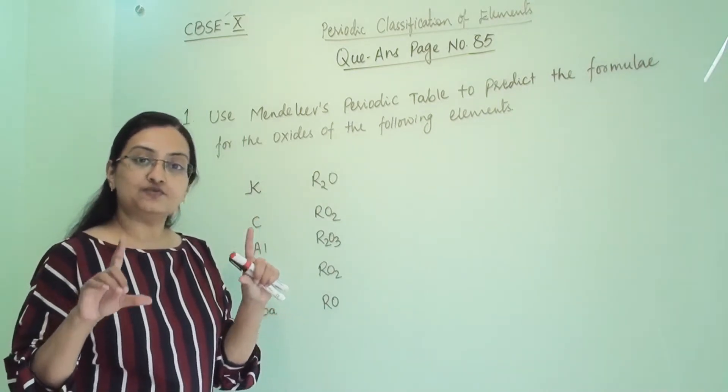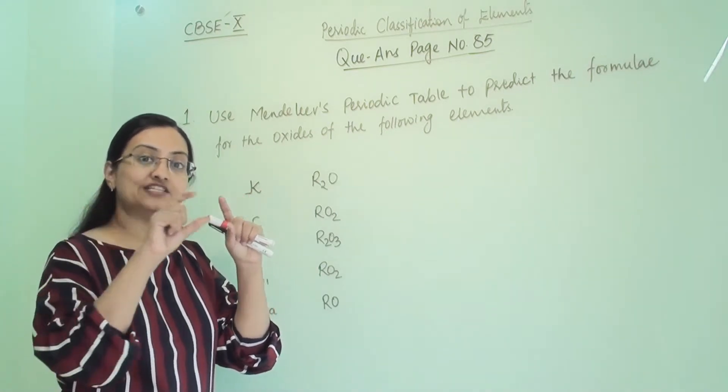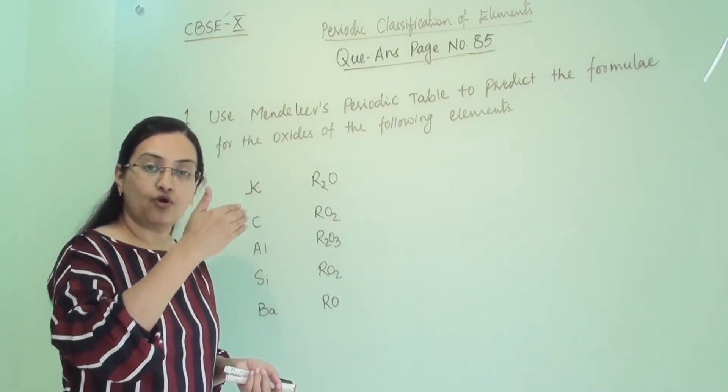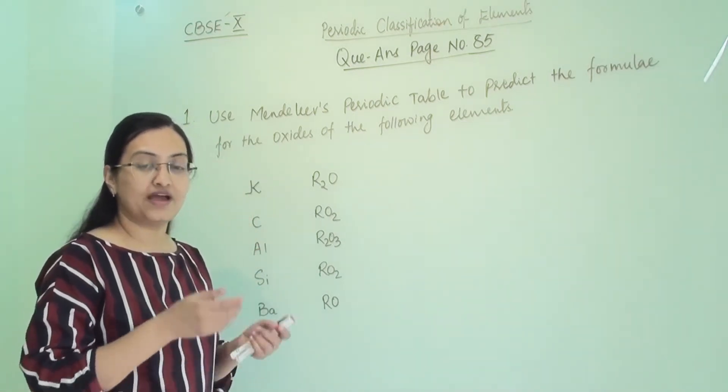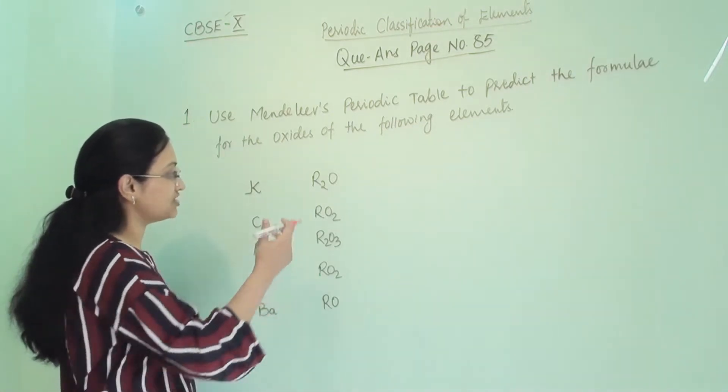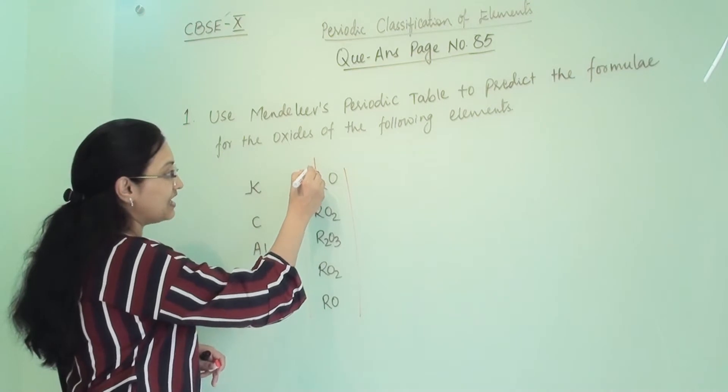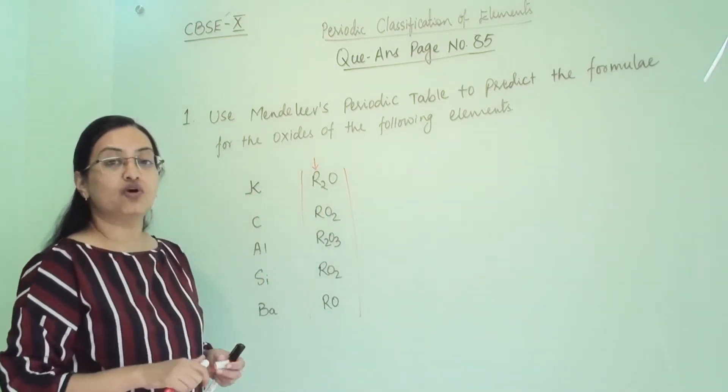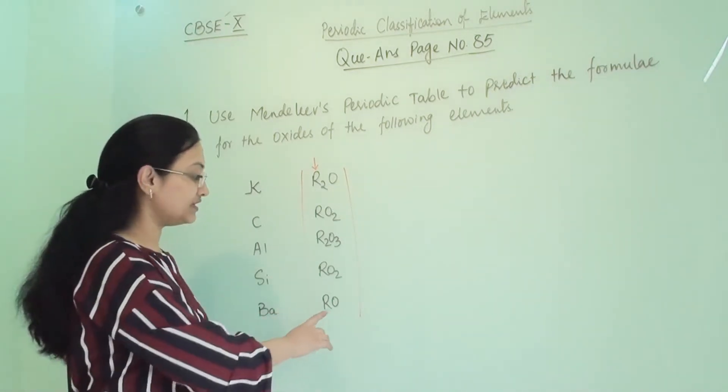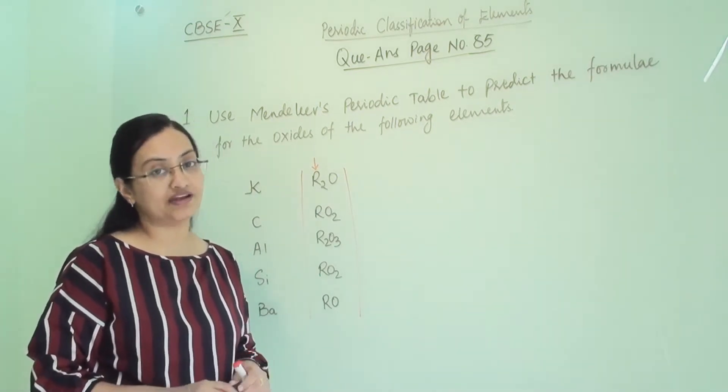Just check the Mendeleev periodic table where he wrote the molecular formula for all the oxides and hydrides, because he checked the molecular formula of all the elements placed in that particular group and derived a generalized formula for that. So here I have written those generalized formulas. In this, R is the element. If you have any doubt regarding this molecular formula and how he derived it, just check my video based on Mendeleev's periodic table.